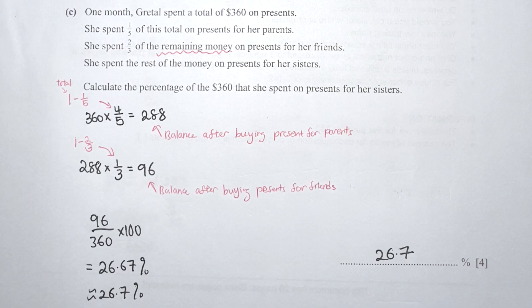Question C is very tricky because of the way they phrase the question. If you overlook the remaining value, you won't be able to solve it. The first thing I did was take 1 minus 1 over 5 to find the remaining fraction. So 360 times 4 over 5 gives 288, which is the balance after purchasing a present for her parents.